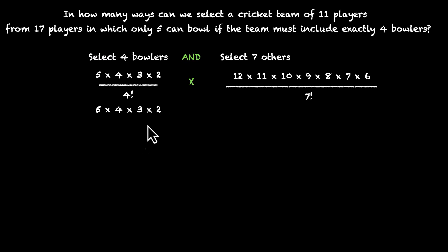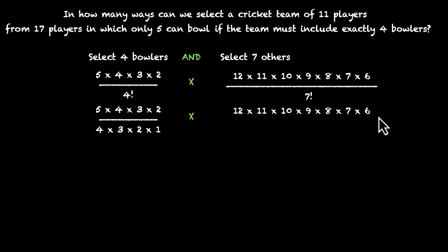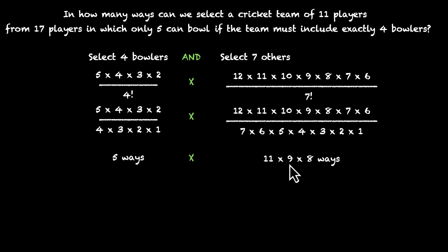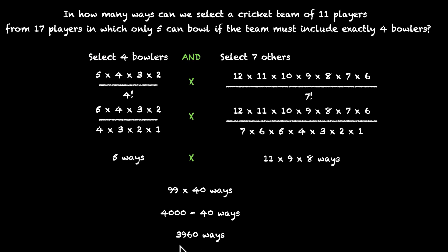So we have (5 × 4 × 3 × 2) / 4! times (12 × 11 × 10 × 9 × 8 × 7 × 6) / 7!. Simplifying: the four factorial (4 × 3 × 2 × 1) cancels out, leaving 5. For the second part: 7 and 6 cancel, 5 and 2 give 10 which cancels with 10, and 4 and 3 give 12 which cancels, leaving 11 × 9 × 8. So the result is 5 × 11 × 9 × 8. Eleven times nine is 99, five times eight is 40; 99 × 40 = 4000 − 40 = 3960 ways. That's the number of ways to form a team of 11 players of which exactly four are bowlers.